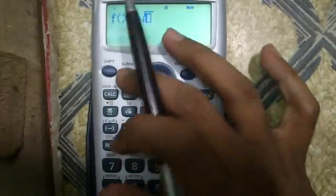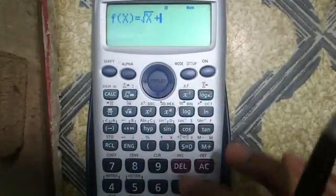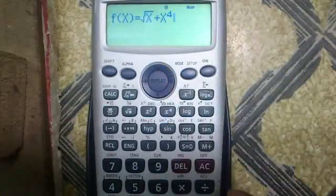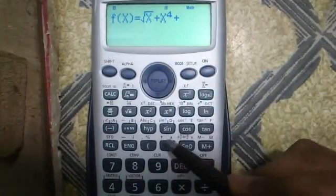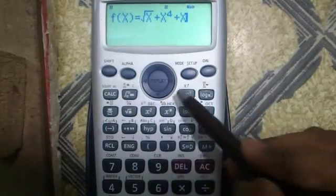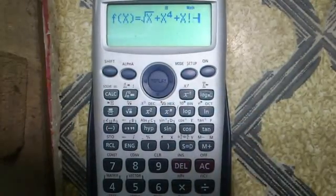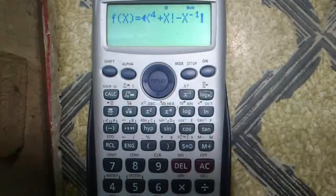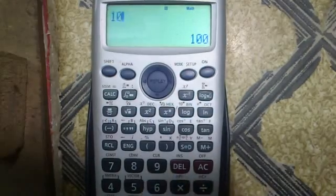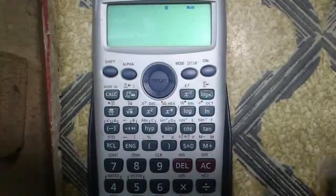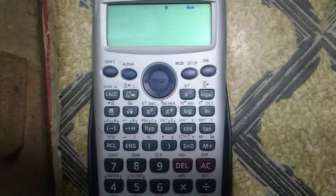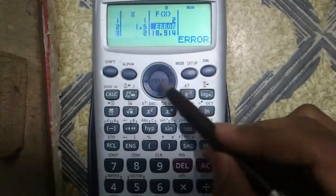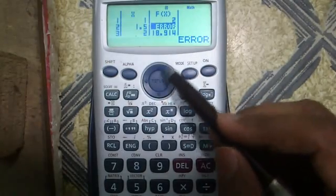For example, for factorial press shift and this button, for inverse press this button without shift, press equals to. Remember, for more complex functions the calculator may take more time to produce the result, and sometimes it may produce an error if the division or calculation is not possible.